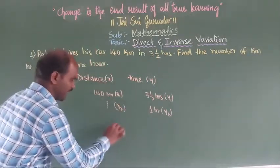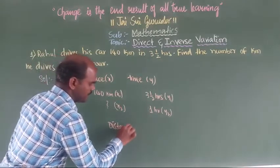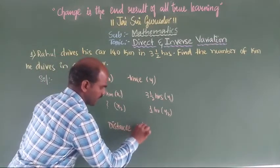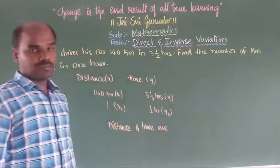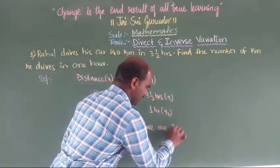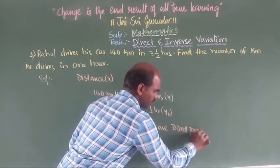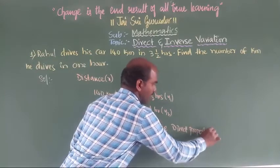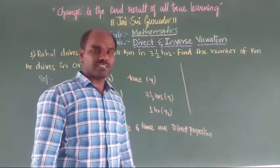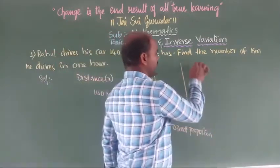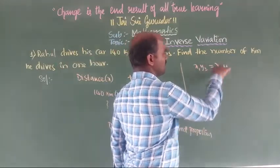Distance and time are in direct variation — direct proportion. When writing as a direct proportion, the formula is: x1 × y2 = x2 × y1.